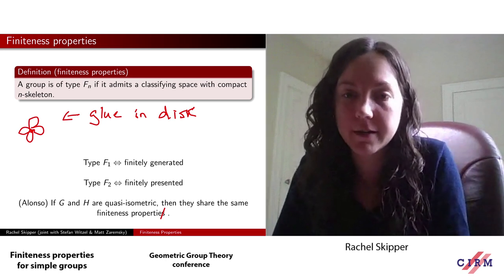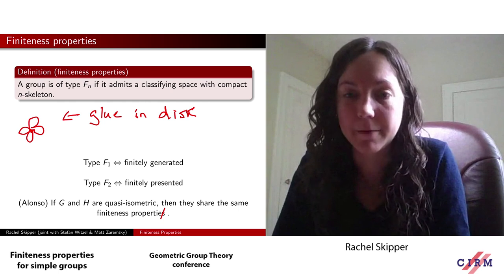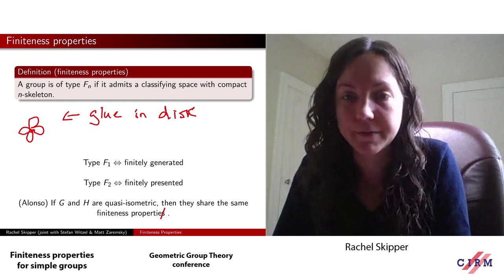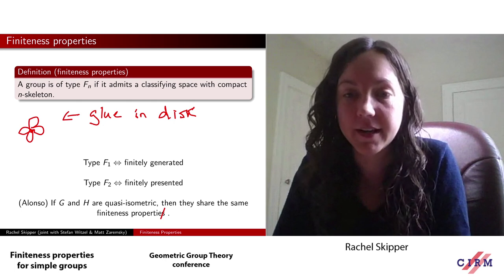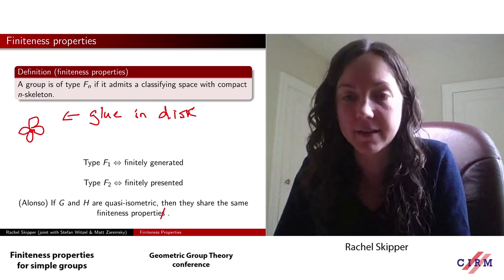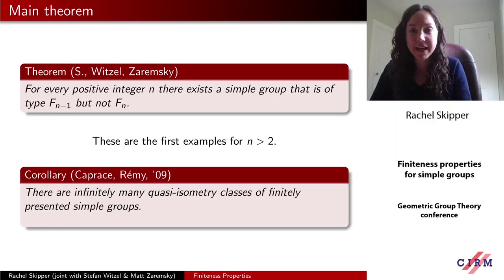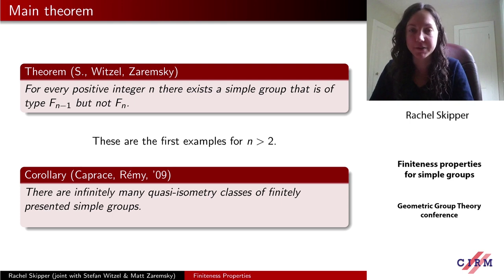An important feature of finiteness properties is that they are in fact a quasi-isometry invariant. It's a theorem of Alonso's from the 90s that if G and H are quasi-isometric, then they share the same finiteness properties. The main theorem I want to talk about today is the following: for every positive integer n, there exists a simple group that is of type Fn minus 1, but not of type Fn.